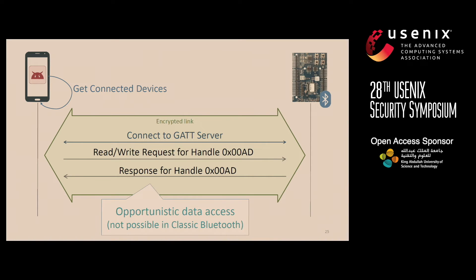This is a form of opportunistic data access which is not possible with classic Bluetooth. In classic Bluetooth, as Navid et al. found, an application creates a socket connection to a Bluetooth device, and while one application is in a connection, another cannot connect. But with BLE, multiple applications on the same device can share the same connection to a BLE device.